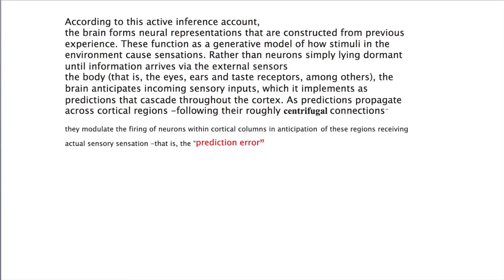According to this active inference account, the brain forms neural representations that are constructed from previous experience. These function as generative models of how stimuli in the environment cause sensation. Rather than neurons simply lying dormant until information arrives via the external senses — the eyes, ears, taste, and other sensory receptors — the brain participates, anticipating incoming sensory inputs which it implements as predictions. As predictions propagate across cortical regions following their roughly centrifugal connections, they modulate the firing of neurons within cortical columns in anticipation of receiving actual sensory sensation. What is computed is the prediction error.